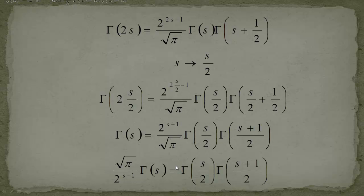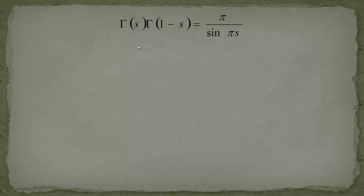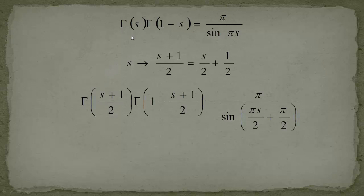Now for the second ingredient — which looks similar but uses the substitution s → (s+1)/2, which we can also write as s/2 plus 1/2. I replace s by this expression throughout: on the left side we get 1 minus s replaced by 1 minus (s+1)/2, and on the right side we get sine of pi·(s/2 + 1/2).